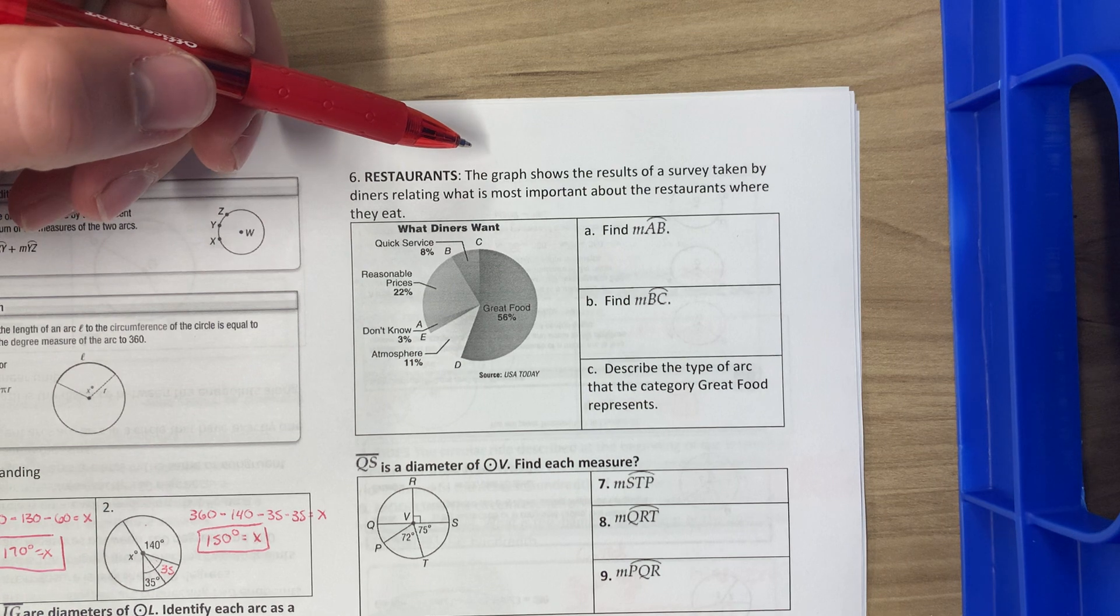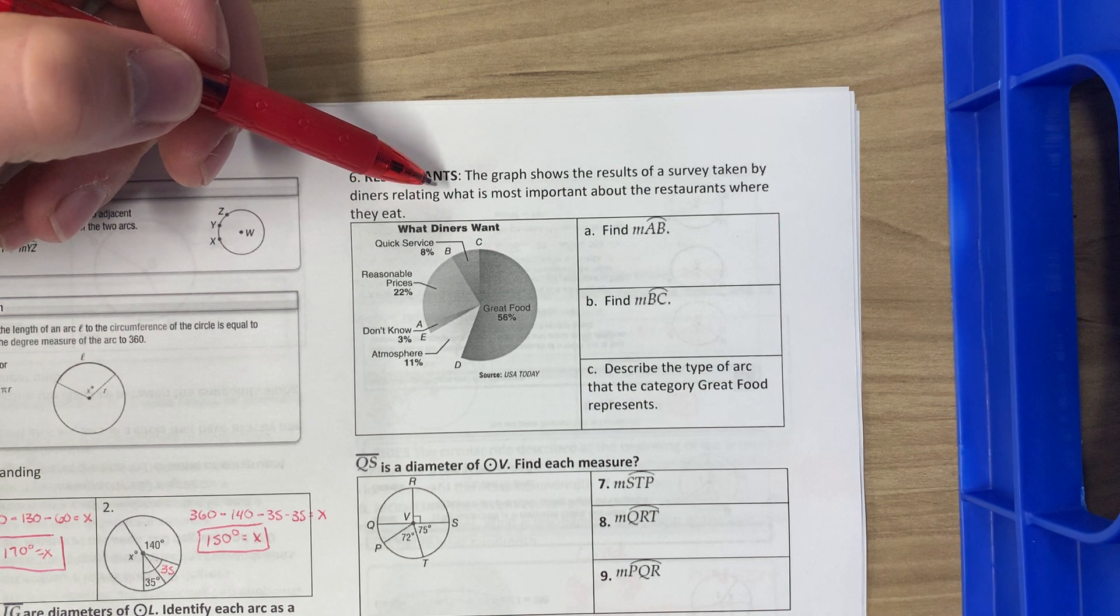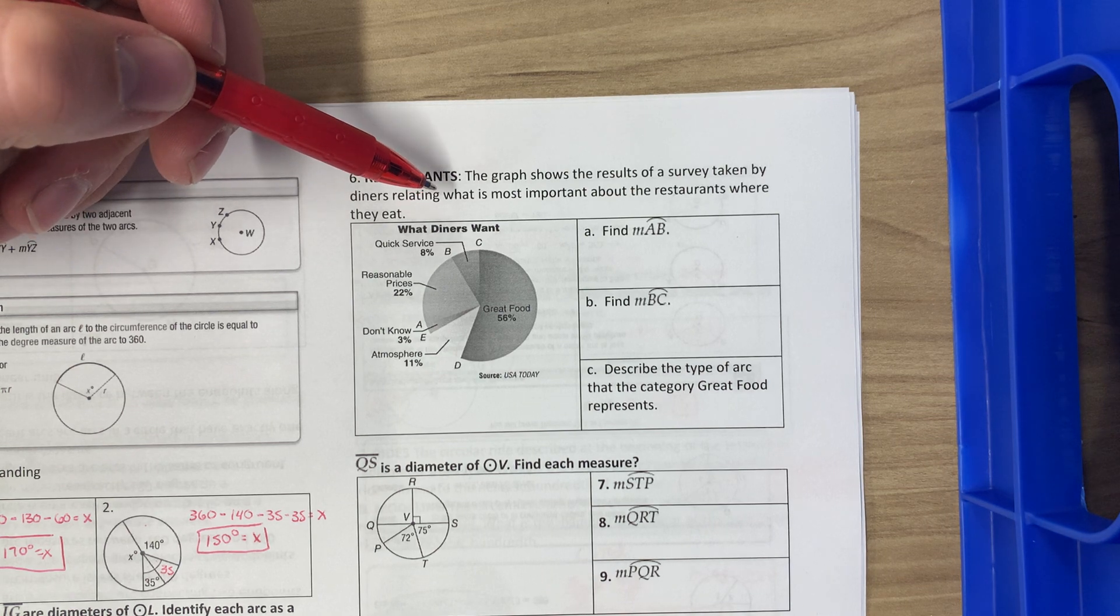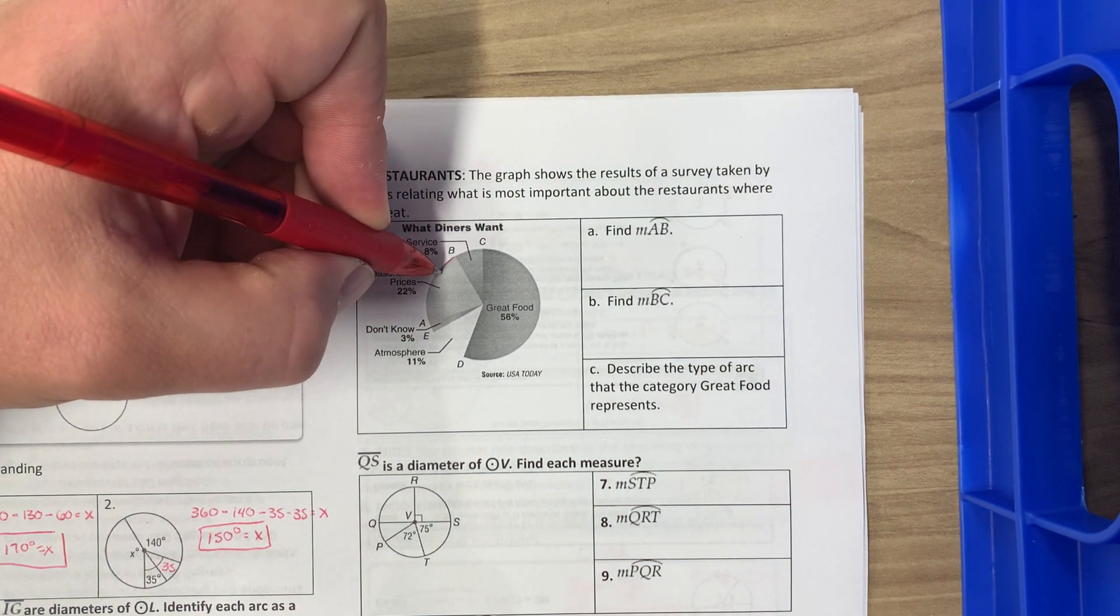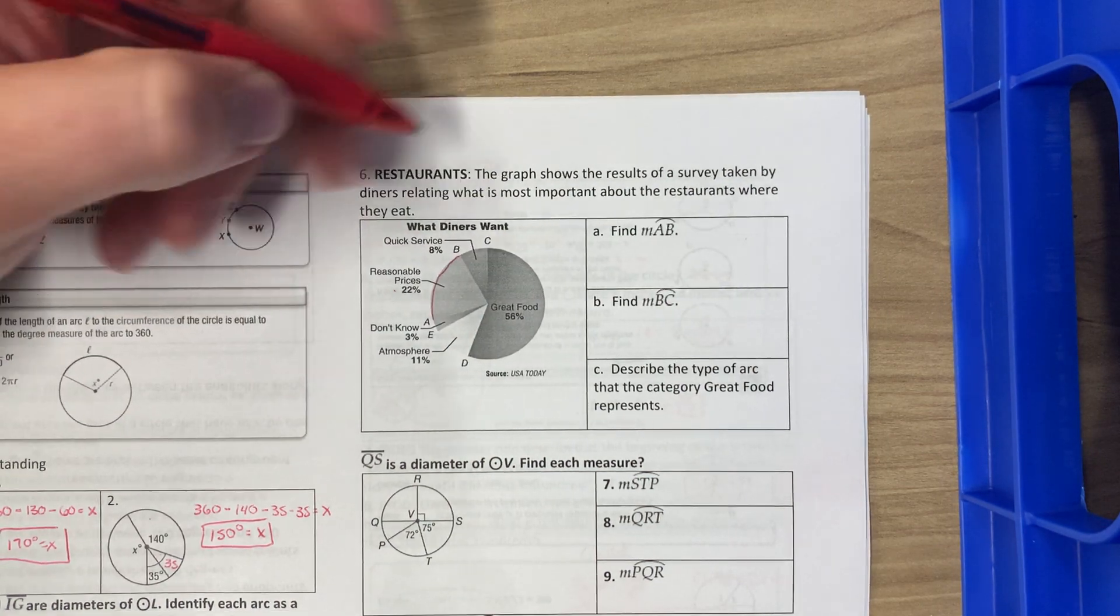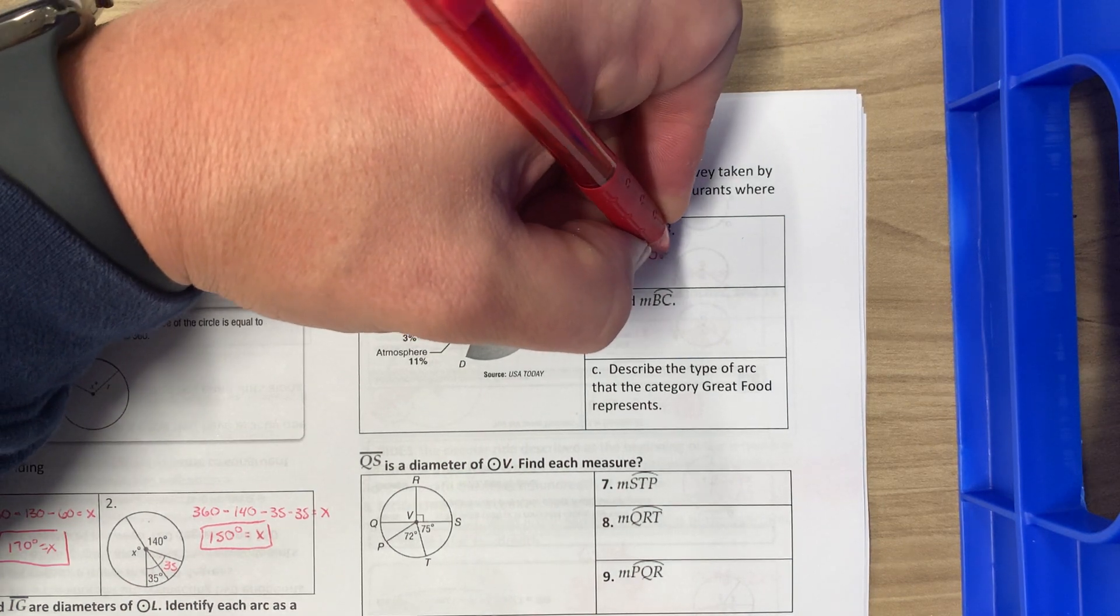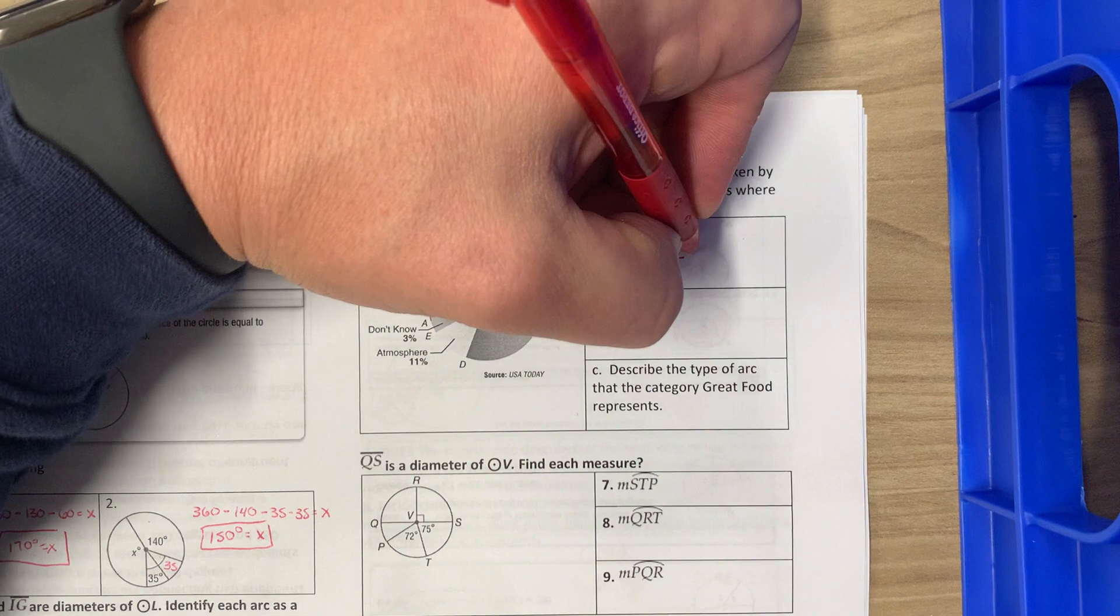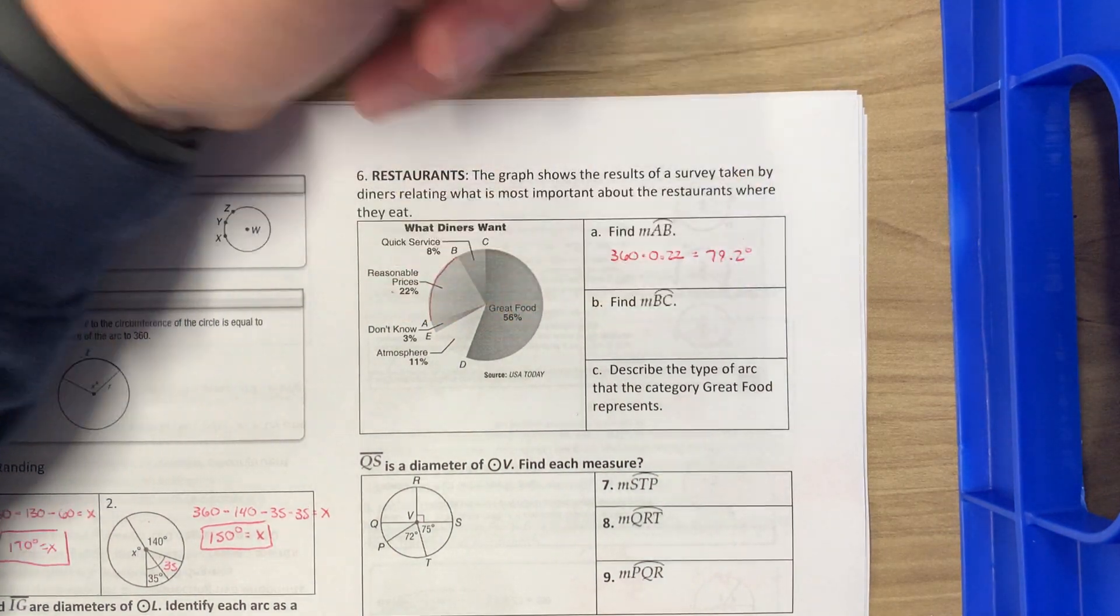The graph shows the results of a survey taken by diners relating what is most important about the restaurants where they eat. So find arc AB. Arc AB is right here. It is 22% of the full 360, so I just do 360 times 0.22 or 22%, which is equal to 79.2 degrees.